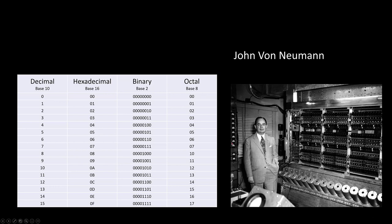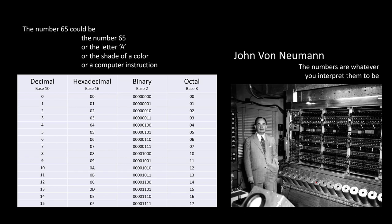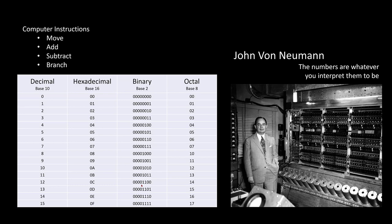This guy here is John Von Neumann. This is an electromechanical computer. These little cans down here on the bottom are memory devices. John Von Neumann said something very important. The numbers are whatever you want them to be. For example, the number 65 could be the number 65, or it could be the letter A, or the shade of a color, or it could be a computer instruction like move or add or subtract or branch.